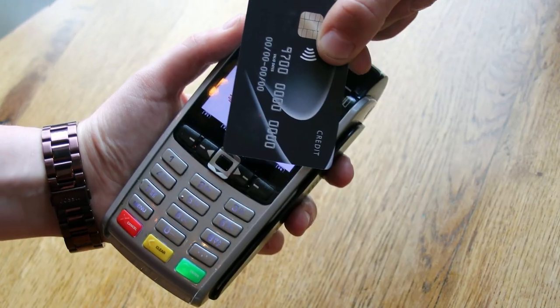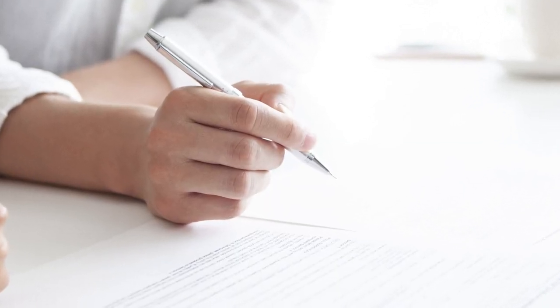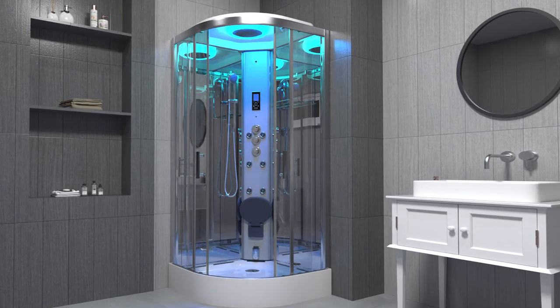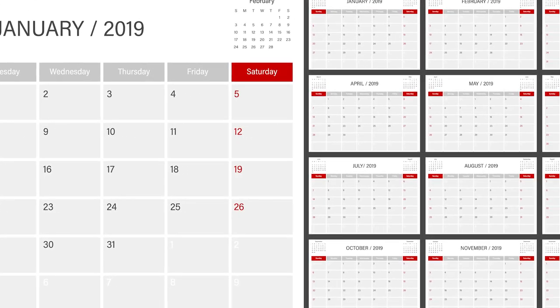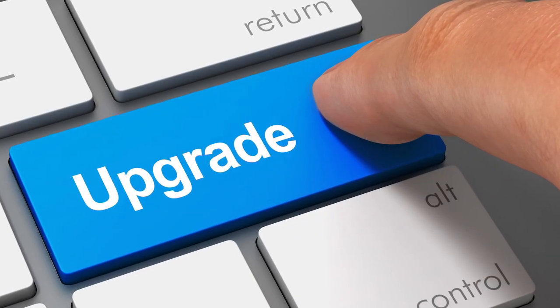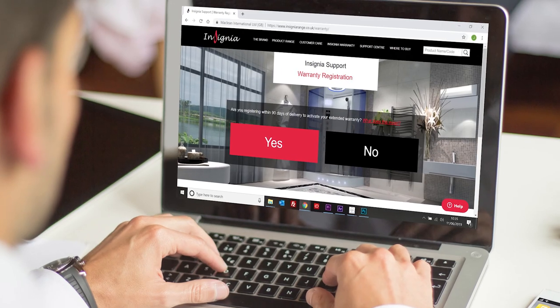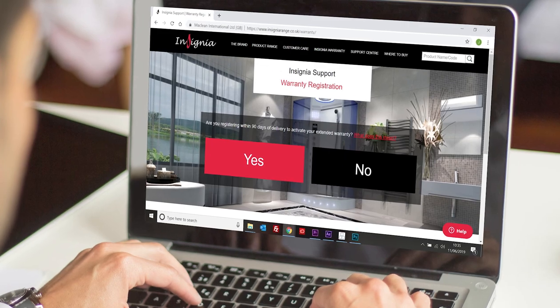Whenever you purchase anything, you want it to be covered against its failing and your shower is no different. This is why you receive a 12 month warranty as standard, which can be upgraded to two years completely free, simply by registering within the first 90 days after delivery.